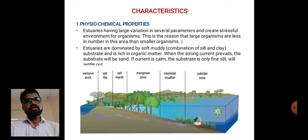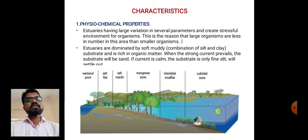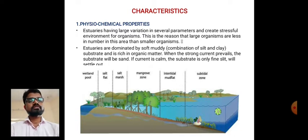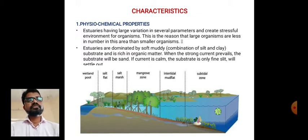The characteristics of estuaries: first are the physicochemical properties. Estuaries have large variation in several parameters and create a stressful environment for organisms. This is why large organisms are fewer in number than smaller organisms. Estuaries are dominated by soft muddy substrate — a combination of silt and clay — and are rich in organic matter.